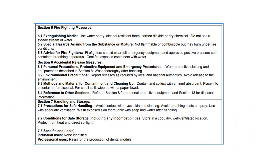Section 5 is Firefighting — usually important to your sprinkler system company, the fire station, building inspectors, and property owners. Section 6 is about accidental release measures — how to collect and dispose of spilled chemicals. Section 7 is handling and storage, which covers storage temperature, sunlight, reactive chemicals, and things you don't want stored next to the material. Purchasing storage cabinets for flammable materials may be required.